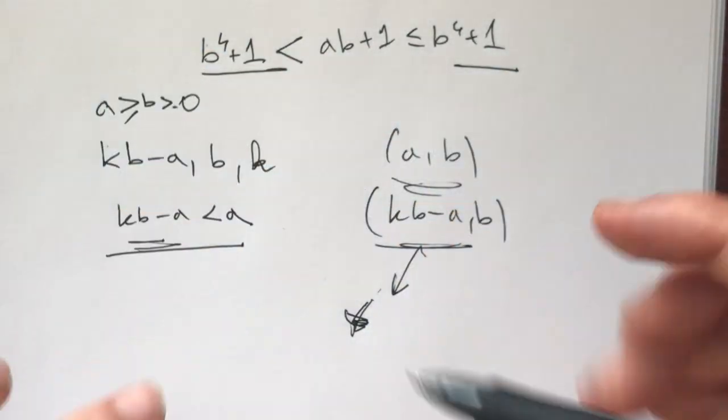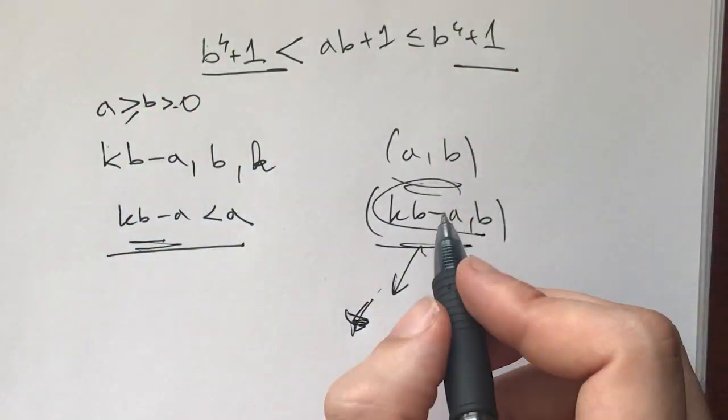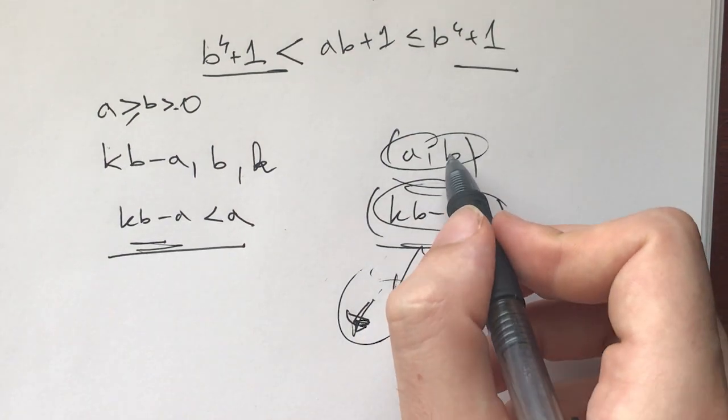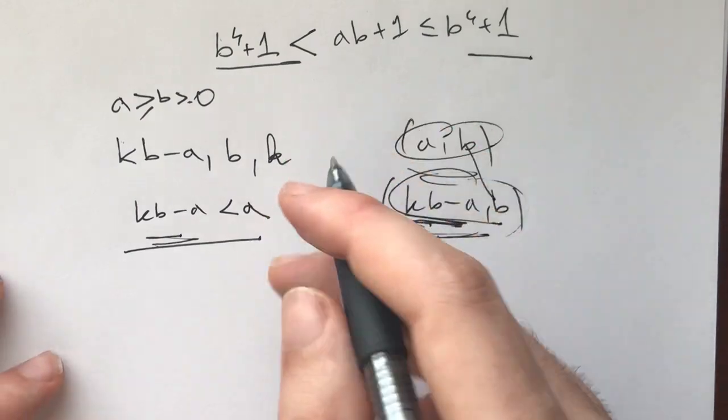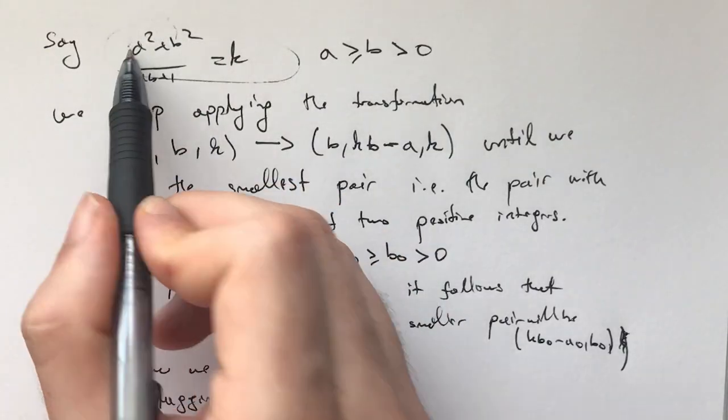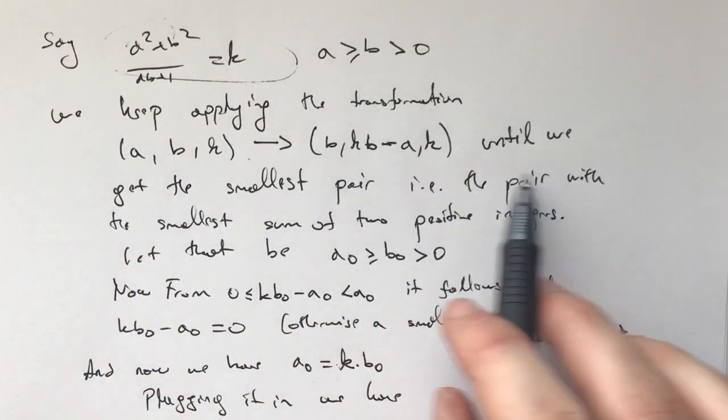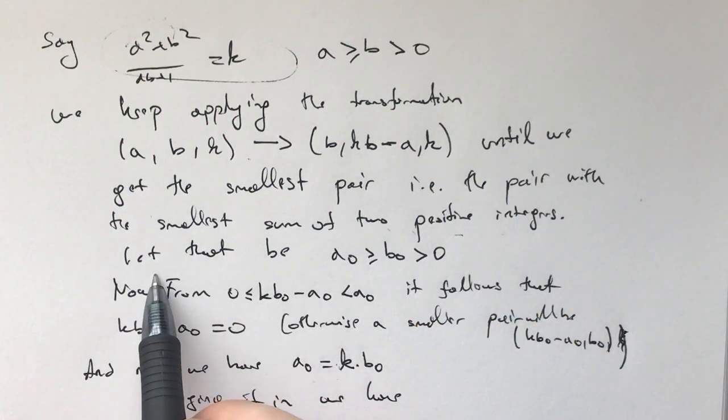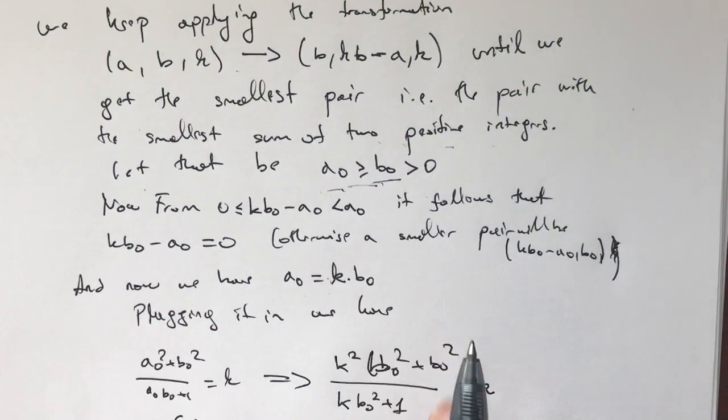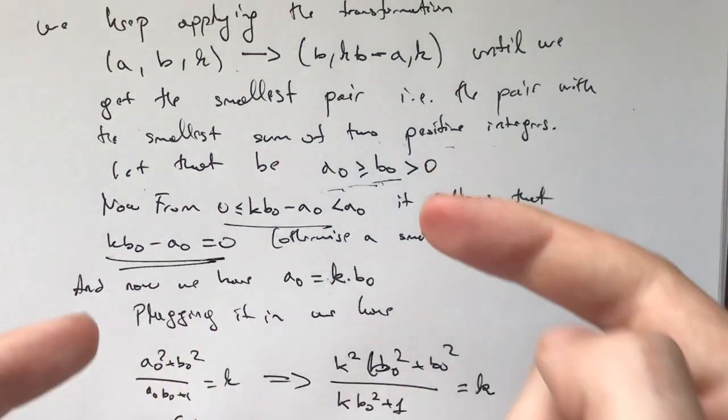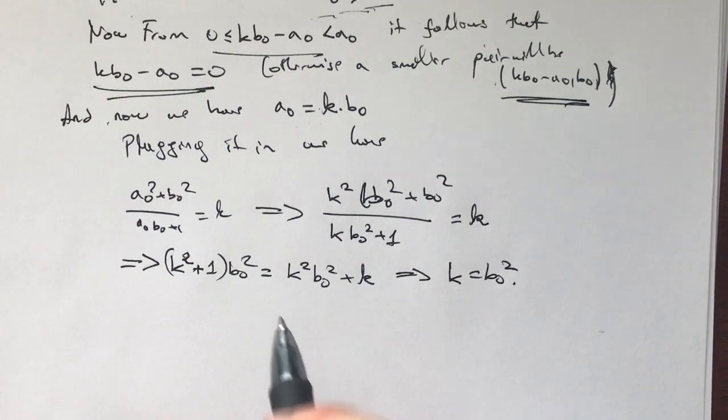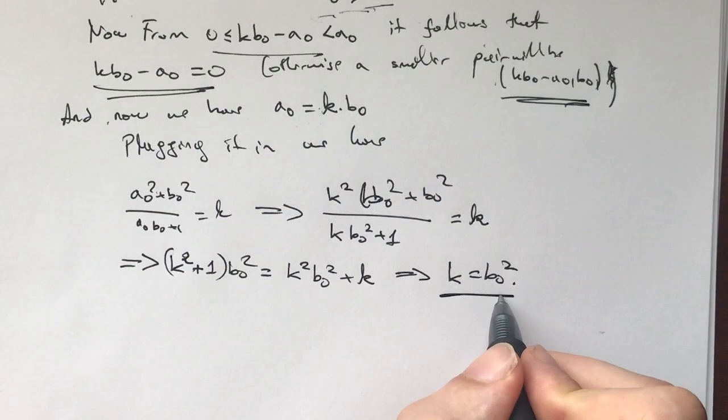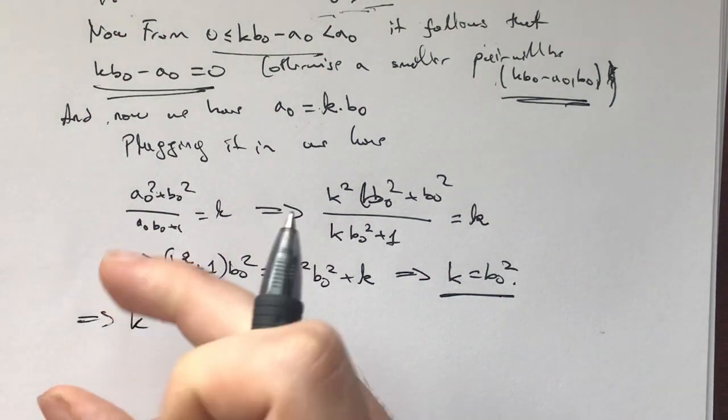And the way to show, to, like, see what happens at that place where we are no longer able to do this, is to use the extremal principle and say, take the pair that's smallest. But how do you characterize the size of a pair? Well, you can characterize this one by the sum, because one of the members is always the same. Like, here, b is the same. Next time, I think this one will be the same. So that's how we can characterize the size of this pair. So now what you do is, on the next page, so we say that this is k for some a, and we keep applying our transformation until we get the smallest pair, i.e. the pair with the smallest sum of the two positive integers. And let that pair be a₀ is greater than or equal to b₀ is greater than 0. And from this, it follows that kb minus a₀ needs to be 0. Otherwise, we would have a smaller pair with this, with the same k. And now we plug in a₀ is k times b₀. We plug that into the equation, which has kept holding since the beginning, when we were applying our transformations. And we get that this implies that k is equal to b₀², which proves that k is a square. And this solves our problem.